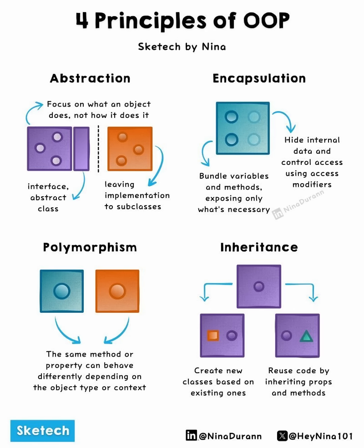3. Polymorphism. This enables objects, methods, or properties to behave differently depending on the type or context. It's the idea of one name, many forms.